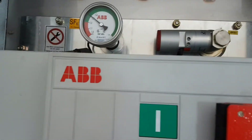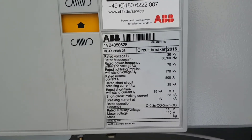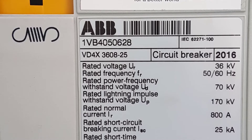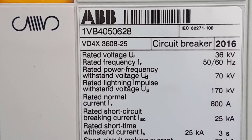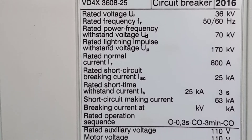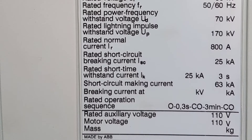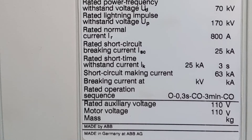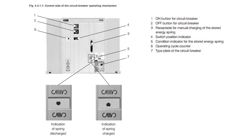This is circuit breaker VT4 and here you can see its nameplate data: rated voltage is 36 kV, current is 800 A, rated short-time withstand current is 25 kA for 3 seconds, and rated auxiliary voltage is 110 V DC.